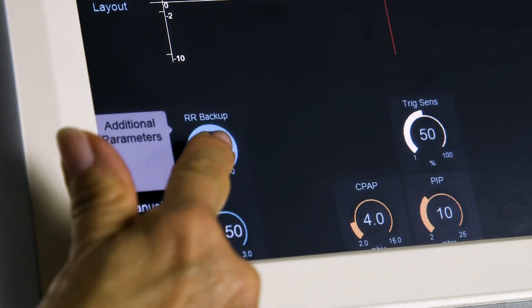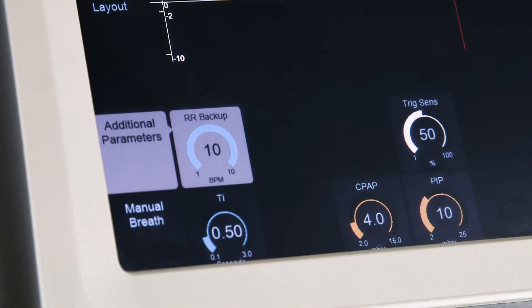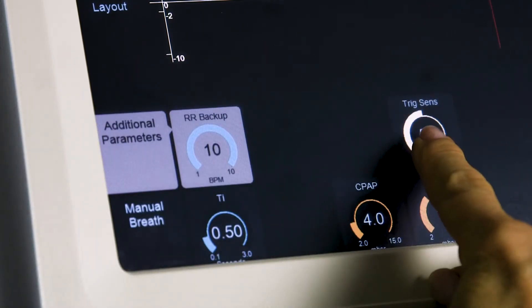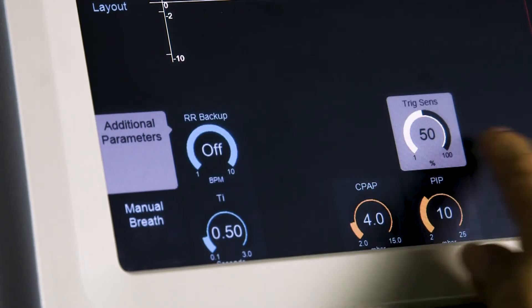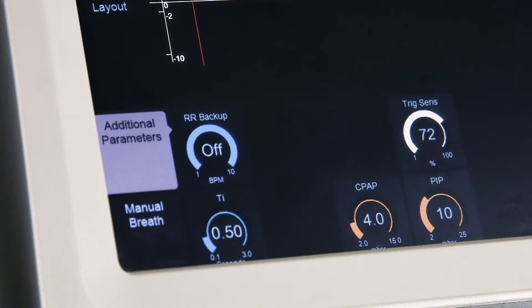RR Respiration Rate Backup: Push and hold to enable the backup rate for apnea. Trigger sensitivity adjusts the threshold for breath detection, which is the effort required by the patient for the ventilator to recognize the breath. The higher the number, the greater the sensitivity to detect small breaths.